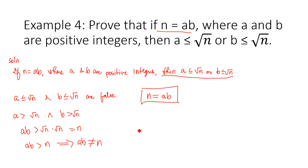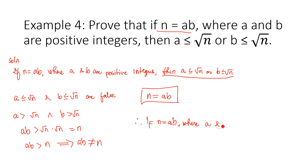By proof by contraposition, we have proved that if n = ab, where a and b are positive integers, then a ≤ √n or b ≤ √n.